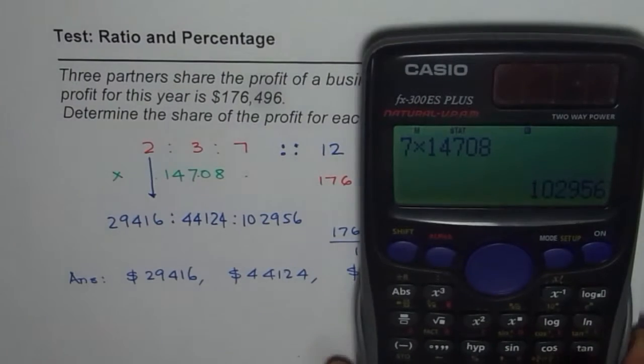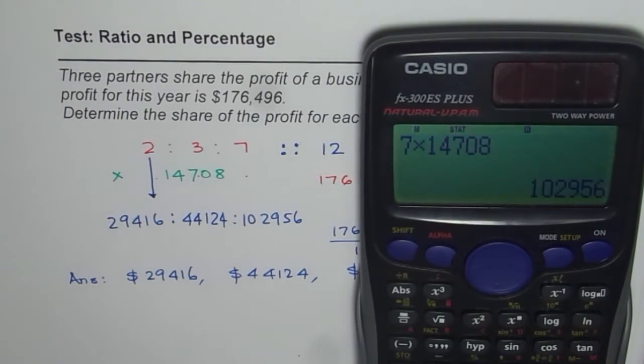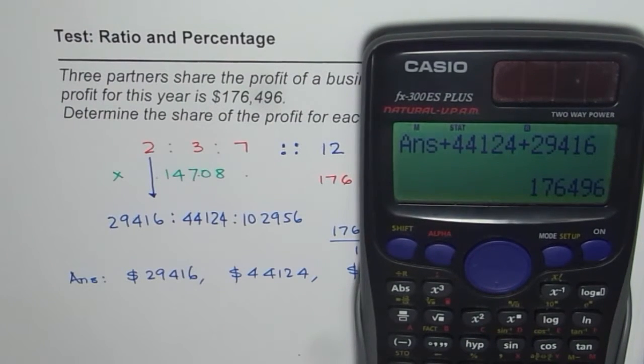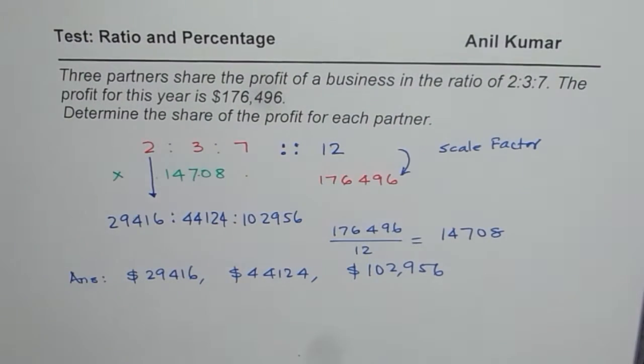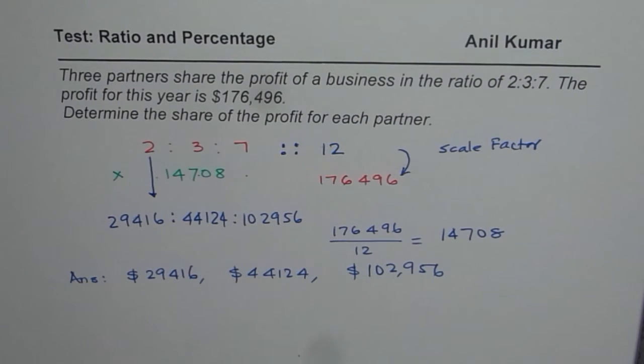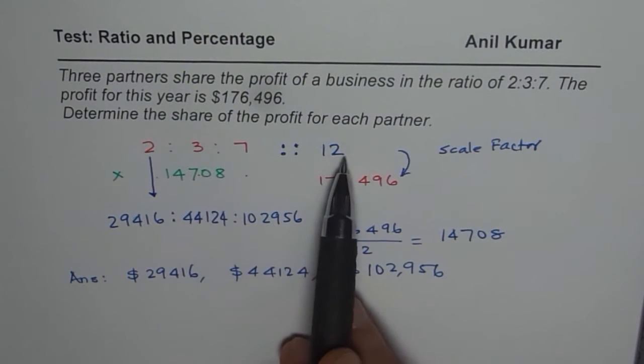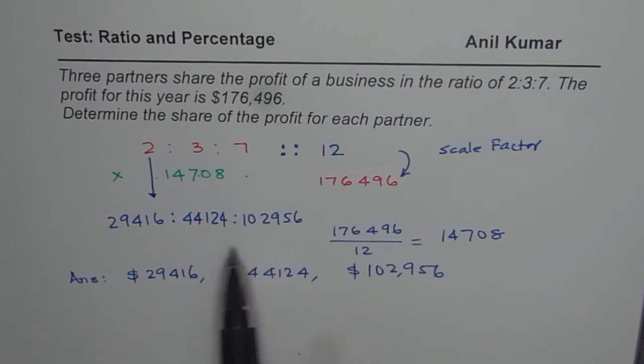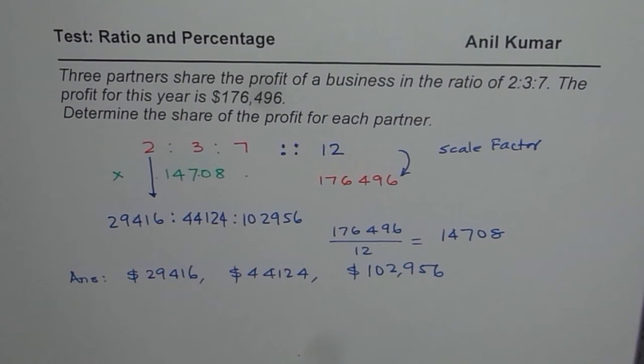So, let us check it also. We have 102,956. Let us add 44,124 and also add 29,416. What do you get? 176,496. So, that is absolutely correct. So, in the ratios, it is kind of important to find the total so that you can find the ratio scale factor and then get your answer. That is how it should be done. Thank you and all the best.